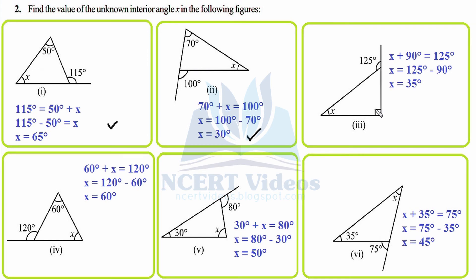Transposing 90° to the right-hand side, it becomes negative: 125 minus 90 equals 35°. This angle measures 35 degrees. For the fourth figure, the exterior angle 120° equals 60° plus X. Transposing 60: X equals 120 minus 60, which is 60°.